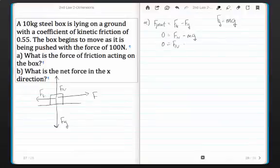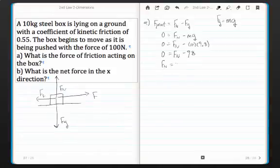Plugging things in, we know that the steel box is 10 kilograms, and the acceleration due to gravity is 9.8. Now, notice how I put the negative there because of the negative sign that came before it. The negative was already taken care of. I'm going to add 98 to both sides to get my normal force to be equal to 98 newtons.